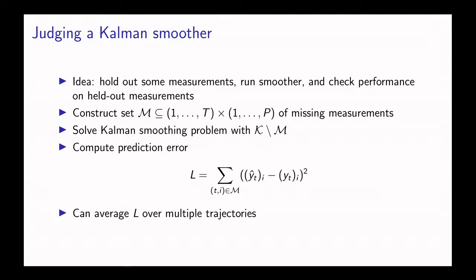In this slide we describe how one could imagine judging a Kalman smoother. The idea is that you're going to hold out some of the measurements that you actually know, run the smoother on the remaining measurements, and then check performance on the measurements that you held out.